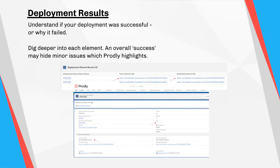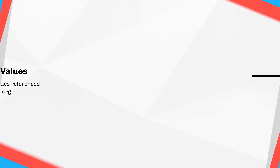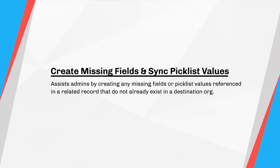Deployment results are key to understanding if your deployment was successful or why it failed. You can dig deeper into the results of each element — just because the overall result is success, there may be a few elements that had minor issues needing to be addressed. Prodly can also assist admins by creating any missing fields referenced in a related record that do not already exist in a destination org, and the same goes for picklist values.